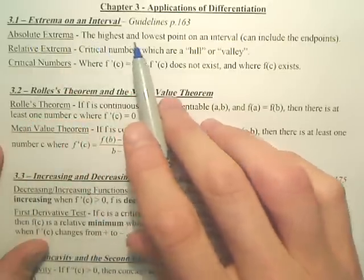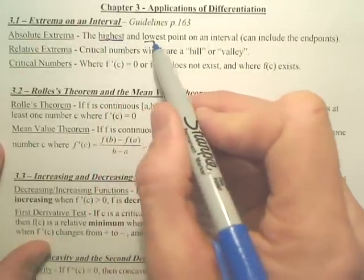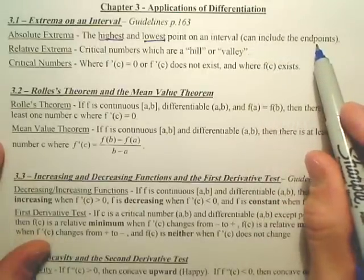Absolute are the highest and lowest point on an interval. Highest and lowest point on an interval. It can include the endpoints, it usually does.